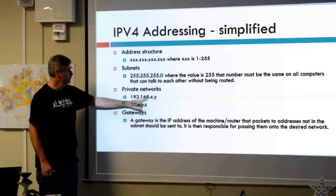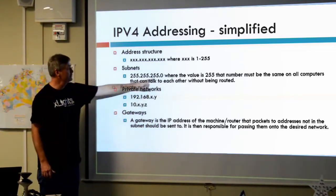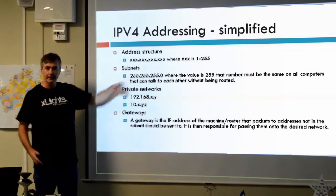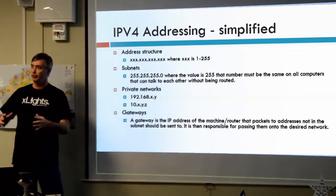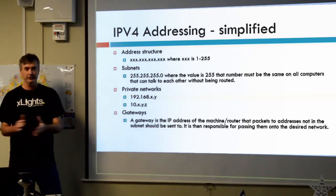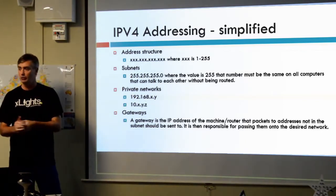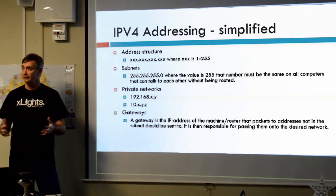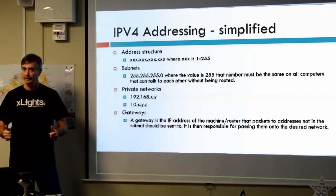Most people typically use a 255.255.255.0 subnet, and that means on your network you're basically limited to about 254 machines talking to one another.